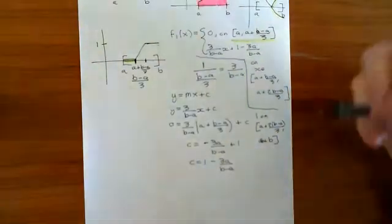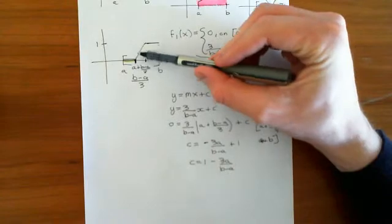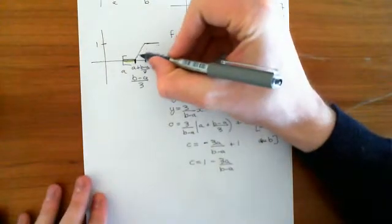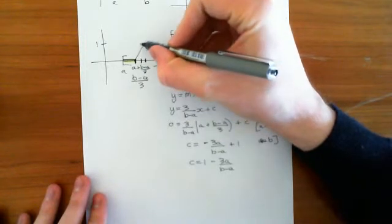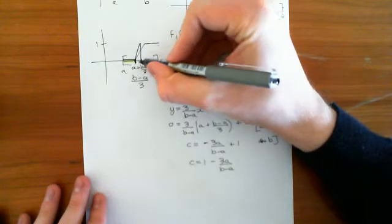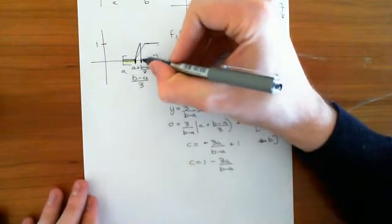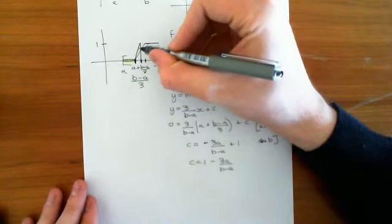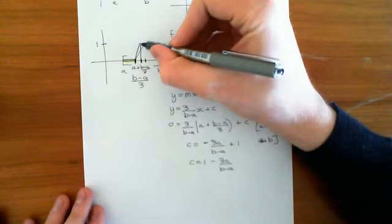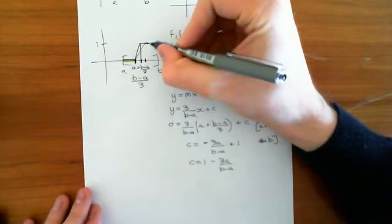That's going to be our first function in the sequence. Now what I want to do is make this line steeper — basically twice as steep. So at half the delta x, I want it to rise uniformly to one on half the amount of delta x. I'm going to halve this middle interval and make it rise twice as fast. Then after it's risen to one, it will just remain at one, so the portion on which it's one will increase.